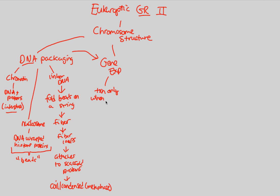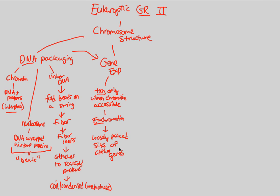Transcription only occurs when the chromatin is in a very specific, accessible state. We can term this euchromatin, or true chromatin — chromatin that is loosely packed and thus accessible. Enzymes can easily get to it because it's in a loosely packed state with sites available for active genes. The genes are out and available for something to come along and express them. This is essentially the ON switch of chromosome structure — when we have this euchromatin form.